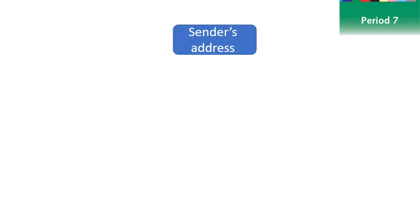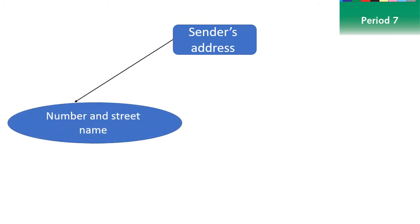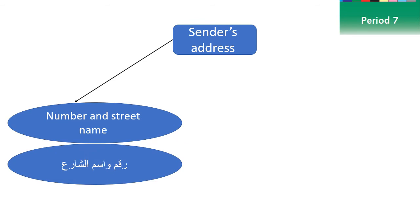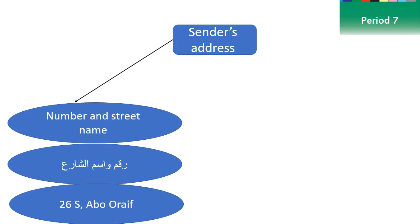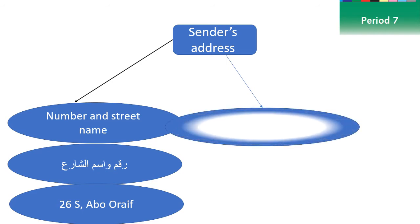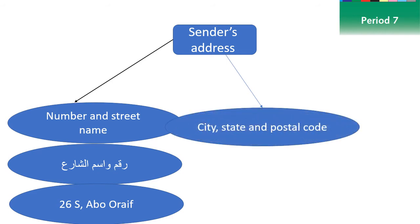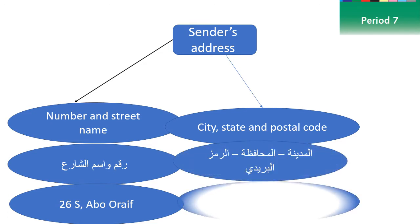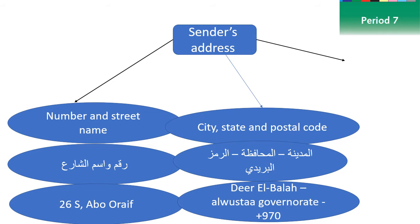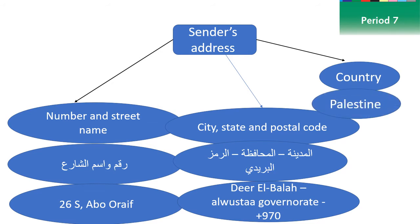Now let's talk about the sender's address. What does the address include? First, the number and street name — for example, 26 Abu Arif Street. Then the city, state, and postal code — like Deir al-Balah, Middle Governorate, and the postal code. And the last element is the country — for example, Palestine.